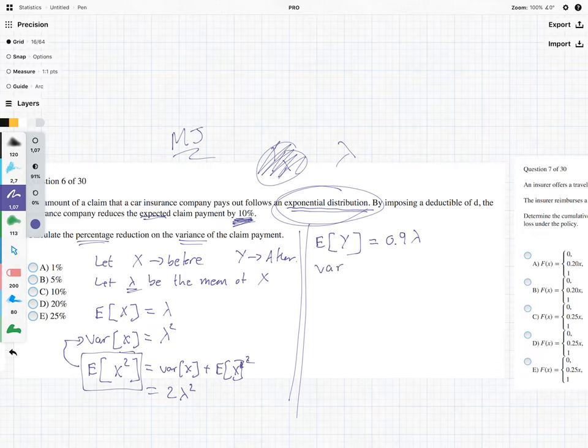Now we can't just say variance of Y and jump straight into it. What we have to do is say, what is the expected value of Y squared?